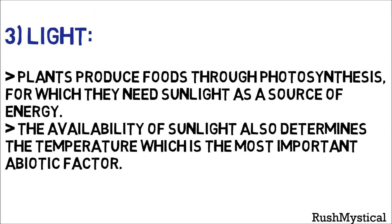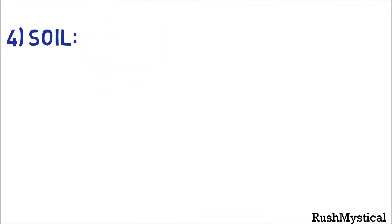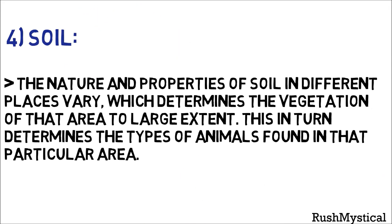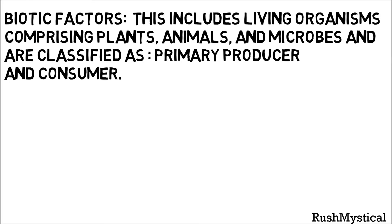Light is another key abiotic factor. Plants produce food through photosynthesis, for which they need sunlight as a source of energy. The availability of sunlight also determines temperature, which is the most important abiotic factor. Finally, soil — the nature and properties of soil differ in different places, which determines the vegetation of that place to a large extent, and this in turn determines the type of animals found in that particular area.